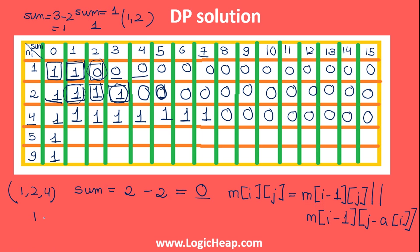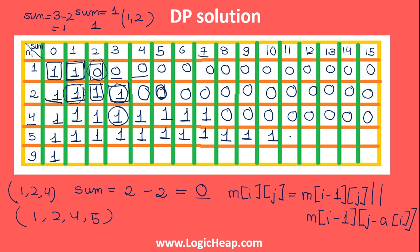For row {1,2,4,5}: sums 1 through 7 get 1. For sum 8: 8 minus 5 equals 3, and at sum 3 we have 1 — store 1. For sum 9: 9 minus 5 equals 4, store 1. Sum 10: 10 minus 5 equals 5, store 1. Sum 11: 11 minus 5 equals 6, store 1. Sum 12: 12 minus 5 equals 7, store 1. The remaining higher sums store 0.